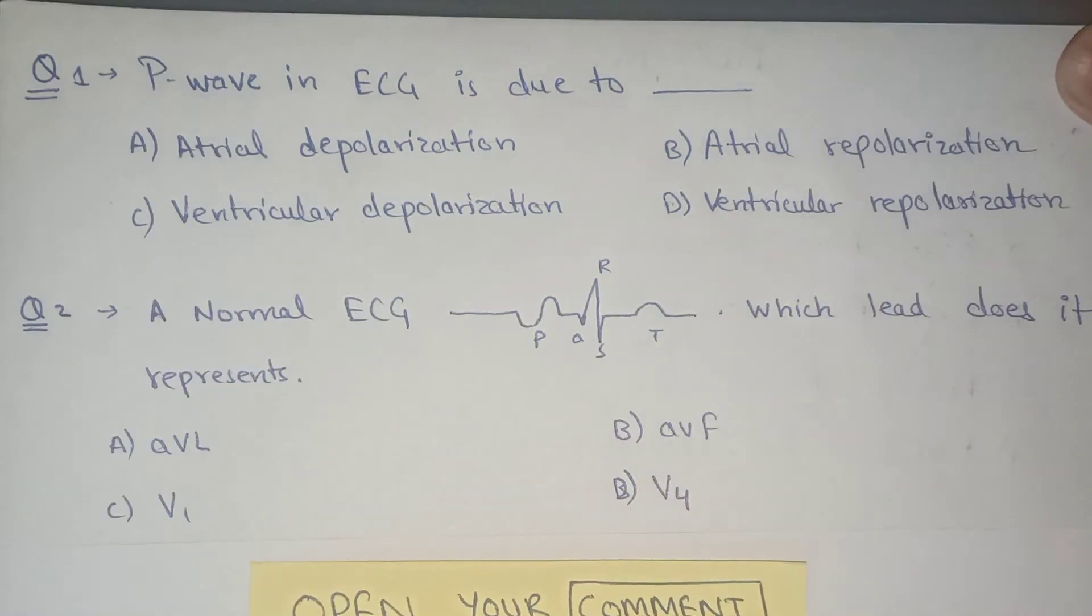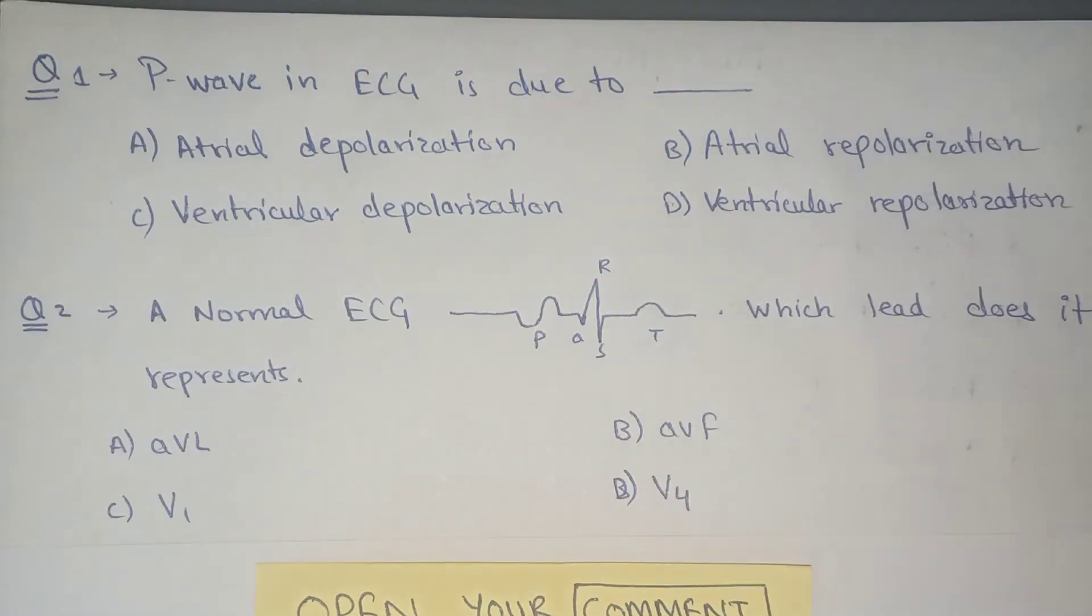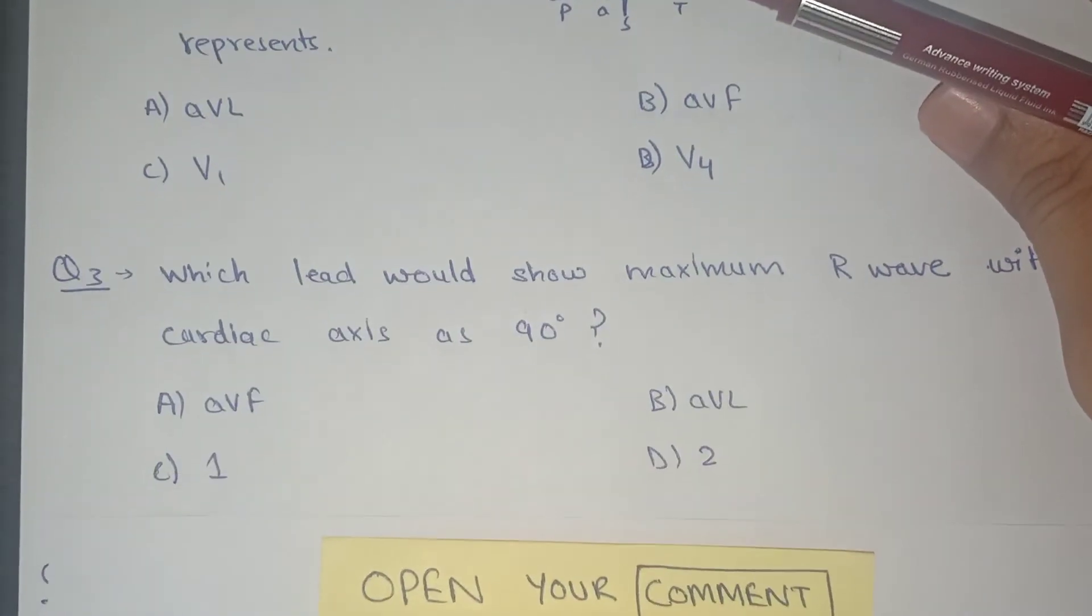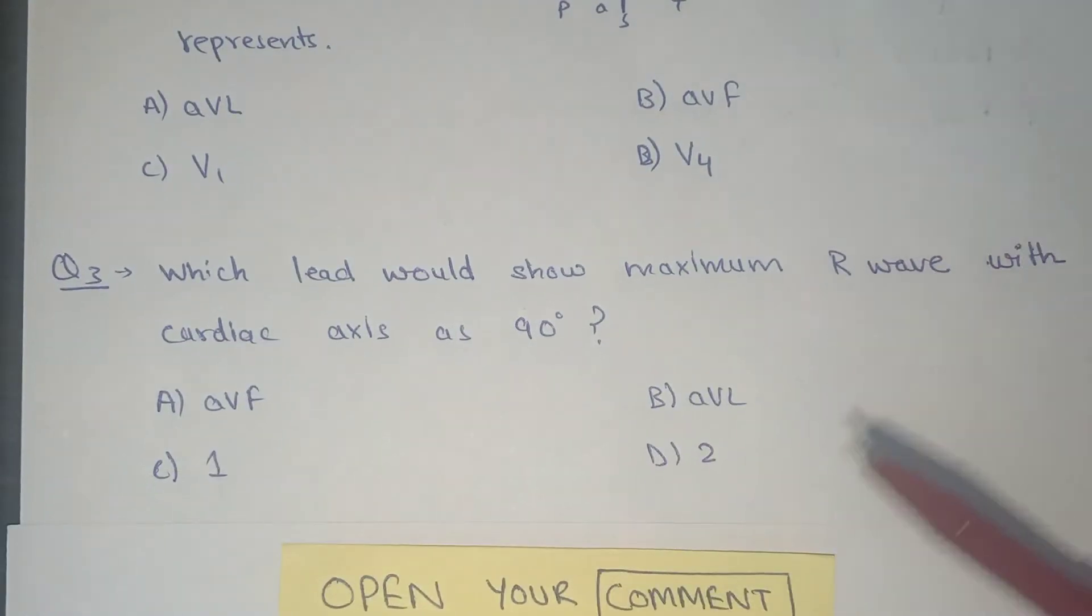The second question is: A normal ECG - which lead does it represent? The options are: A) AVL, B) AVF, C) V1, or D) V4. Comment your answer. Third one is: Which lead would show